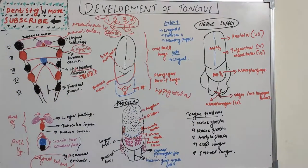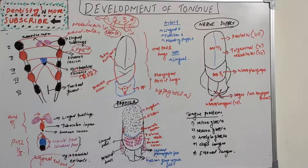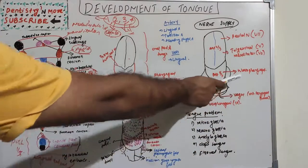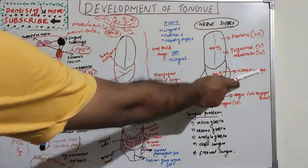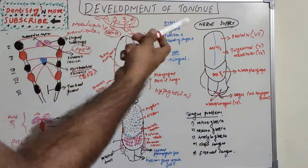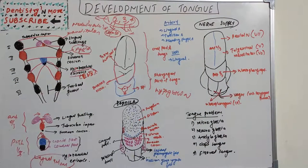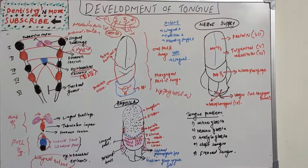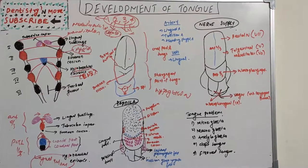There are several nerves involved in supplying the tongue for taste sensation and general sensation. The anterior two-thirds is supplied by the trigeminal nerve, especially the mandibular nerve, and the posterior one-third by the glossopharyngeal nerve. That covers the developmental part of the tongue.